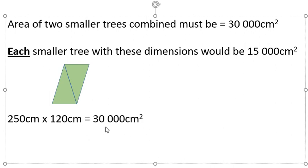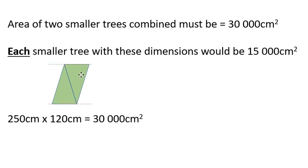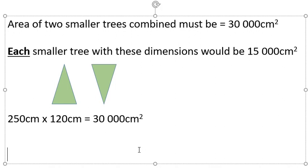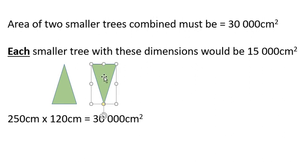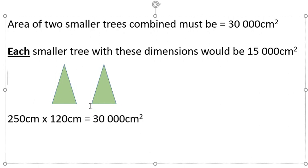But this 30,000 centimeters squared is both trees put together. One tree would just be 15,000. So you can see that from here. If I do 250 centimeters times 120 centimeters, that's 30,000 centimeters squared. So one of these triangles would be 15,000 centimeters squared. So our base would be 120 centimeters and the height would be 250 centimeters for this triangle. And if I move this one back, we would get the same thing. The base of 120 centimeters and the height of 250 centimeters.